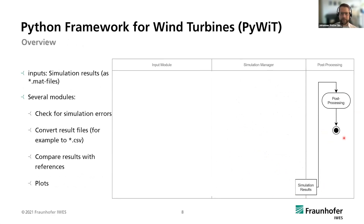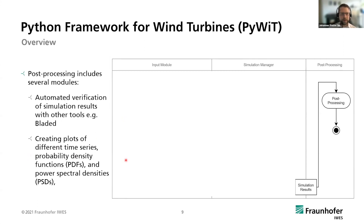The last step is post-processing, which in the picture looks small but involves many steps depending on what you want to see — for example, checking for simulation errors, converting results files to CSV or NetCDF if you don't want to use the MAT file, and comparing results with references, which is a very important step for test automation. There is also the possibility to create several plots.